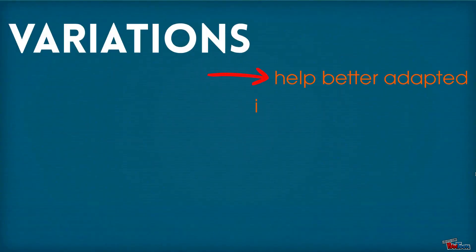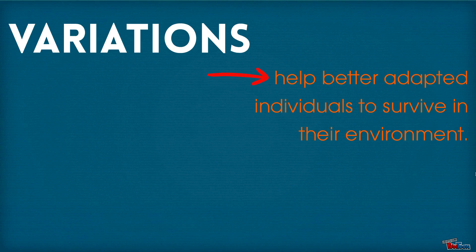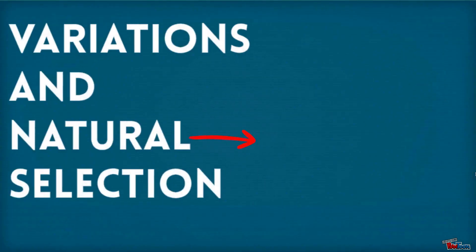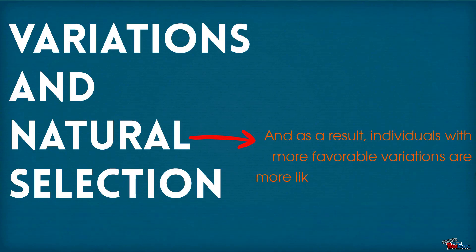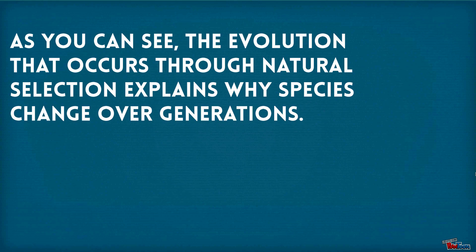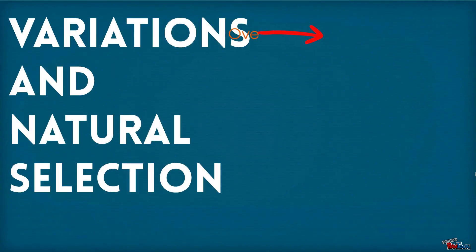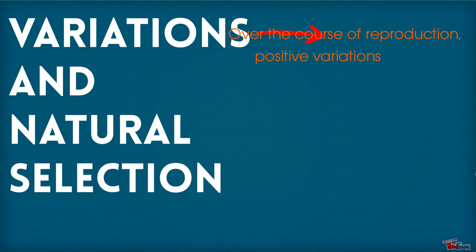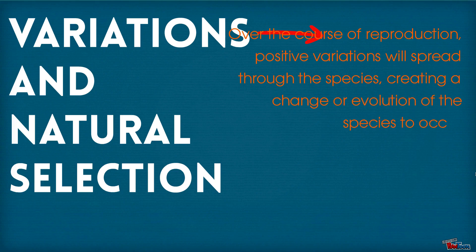Variations help better adapted individuals to survive in their environment. As a result, individuals with favorable variations are more likely to survive, reproduce, and pass on their traits. The evolution that occurs through natural selection explains why species change over generations. Over the course of reproduction, positive variations will spread through the species, creating a change or evolution of the species to occur.